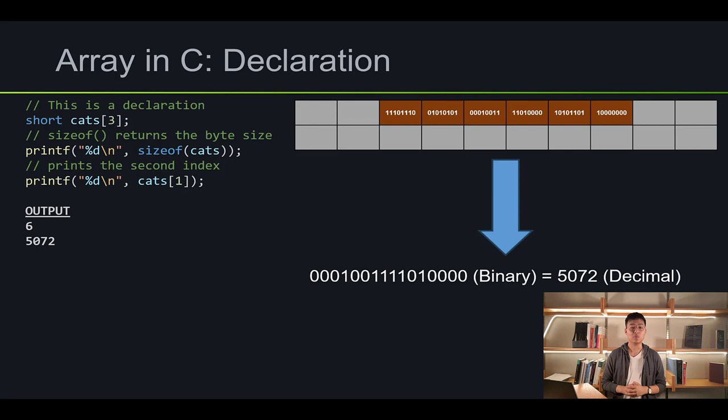We're taking six blocks. When we declare, we are telling the computer we just want to reserve those spots and we don't want to assign anything yet. So when we print out the second index of our array variable cats, it can print out some weird numbers. In our case, it printed out 5072.